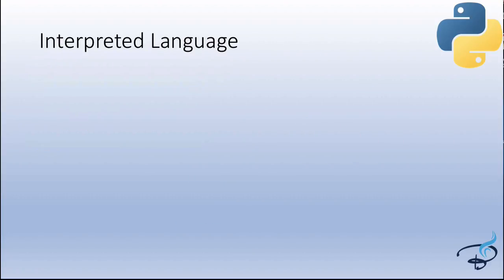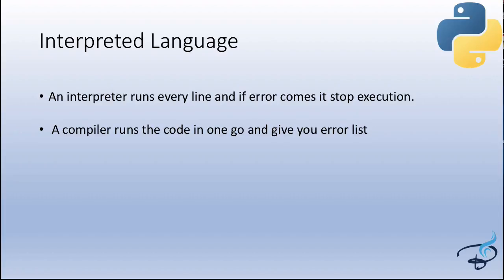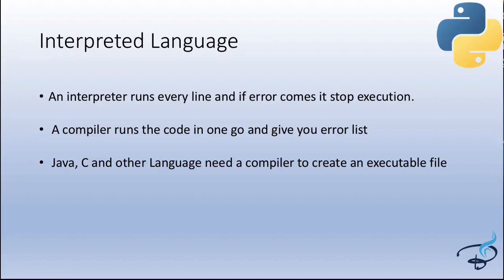Python is an interpreted language, which means the interpreter runs every line and stops execution when an error occurs. Python doesn't require a compiler — a compiler runs the entire code in one go and gives you a full error list. So if your program has three errors, Python will show you the first error when you run it, whereas in C++ the compiler checks all your code and lists all three errors at once.